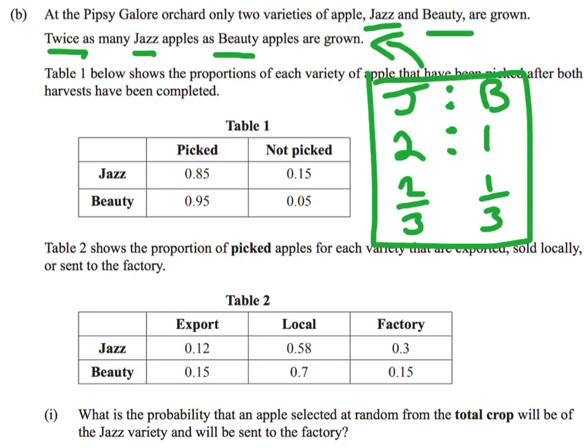Table 1 talks about the apples when they're being picked. We can talk about the chance that jazz or beauty apples are picked or not picked. Then table 2 talks about the picked apples and looks at how many of them go to export, go to the local market, or go to factory.